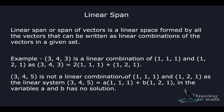Linear span, or span of vectors, is the linear space formed by all the vectors that can be written as linear combinations of vectors in a given set. For instance, the vector [3, 4, 3] can be represented as 2 multiplied by [1, 1, 1] plus 1 multiplied by [1, 2, 1]. So we say [3, 4, 3] spans in those two vectors with scalar multiples of 2 and 1 respectively.